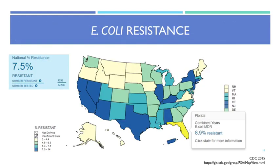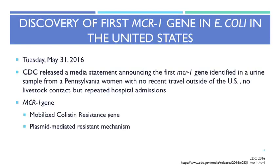A resistance map shows E. coli resistance growing as an issue that can be passed through the food chain. National rates are around 7.5%, but in Florida we're up at 8.9% — slightly higher. If we can do anything to reduce resistance rates, it would be beneficial.